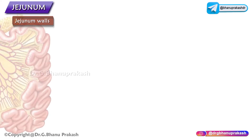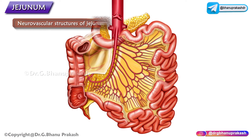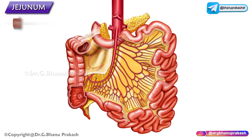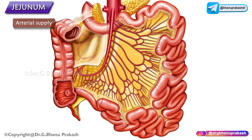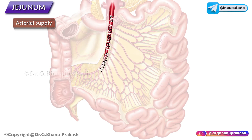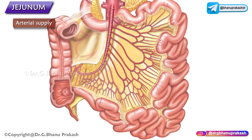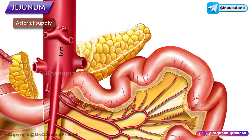Now let us talk about the neurovascular structures associated with the jejunum. Branches from the superior mesenteric artery supply the jejunum. Approximately one centimeter inferior to the celiac trunk, the superior mesenteric artery arises from the abdominal aorta at the level of the L1 vertebra.